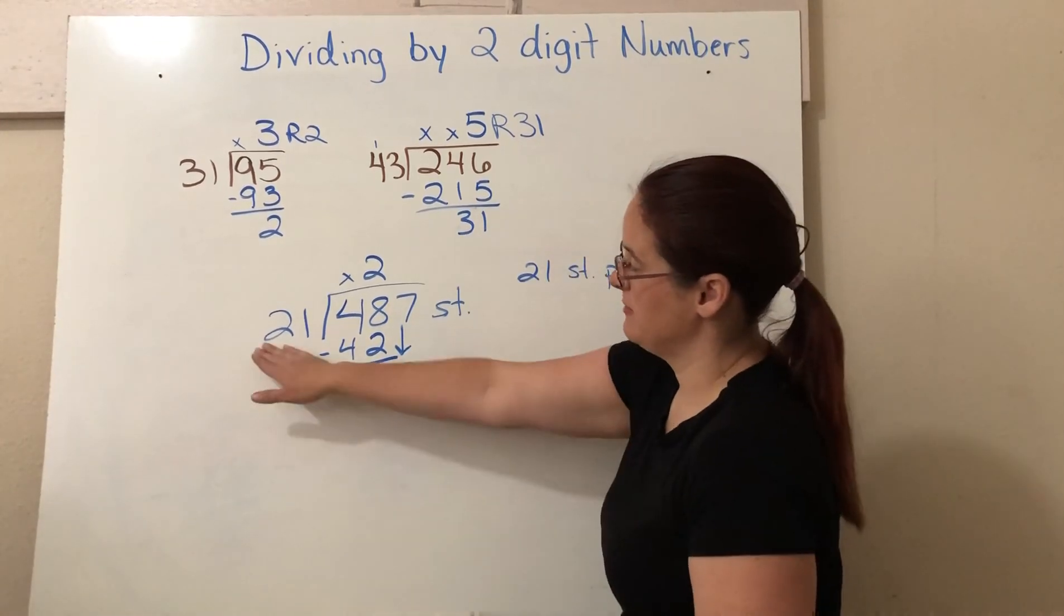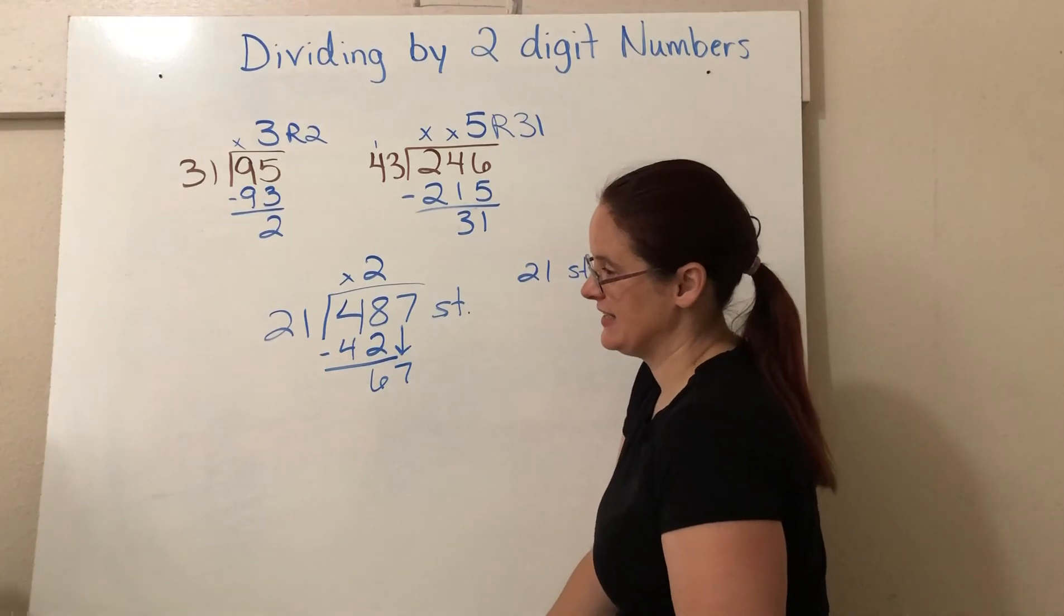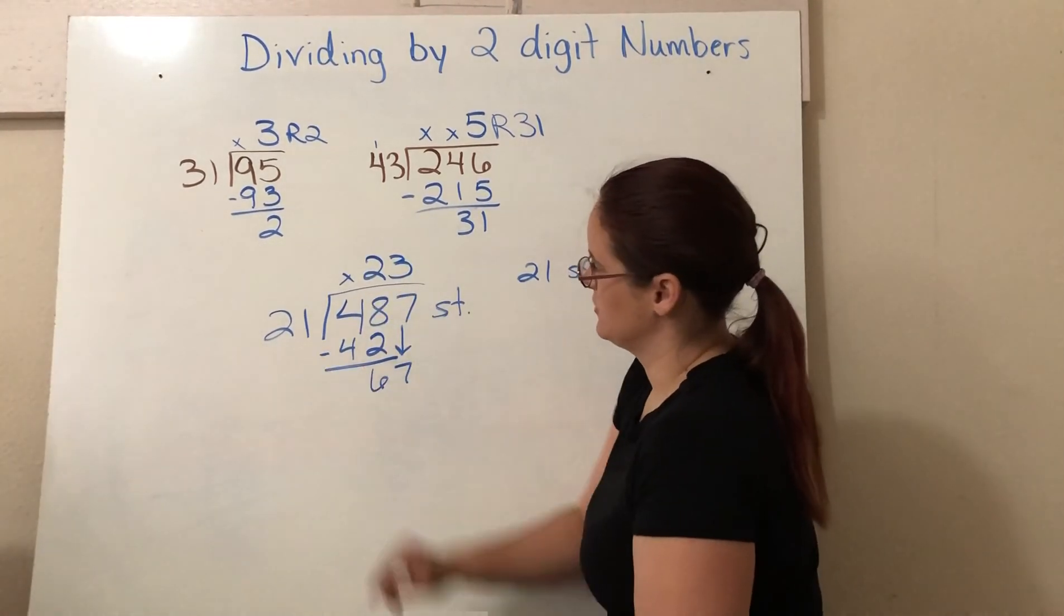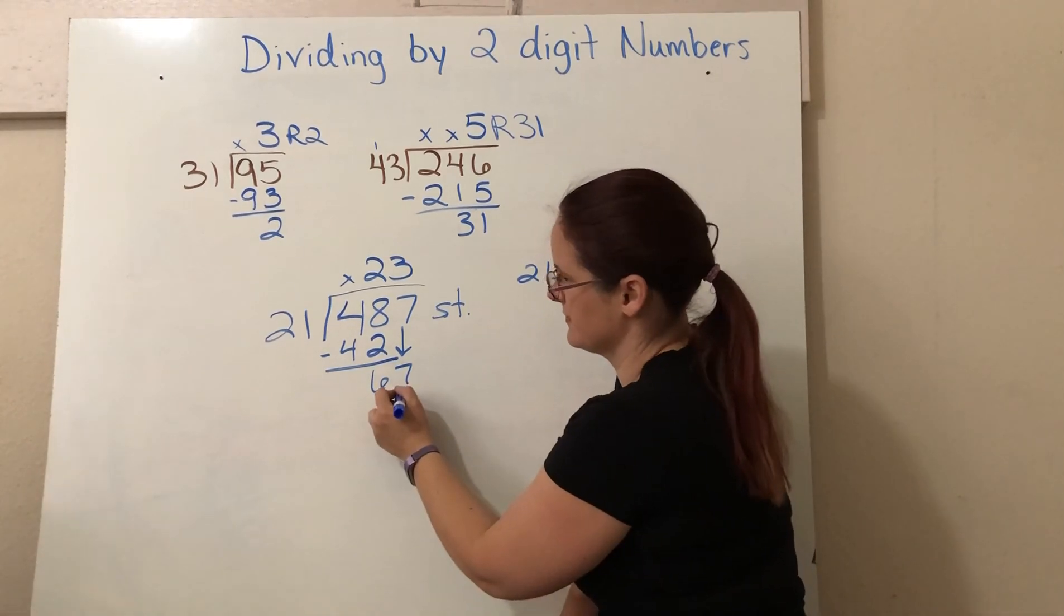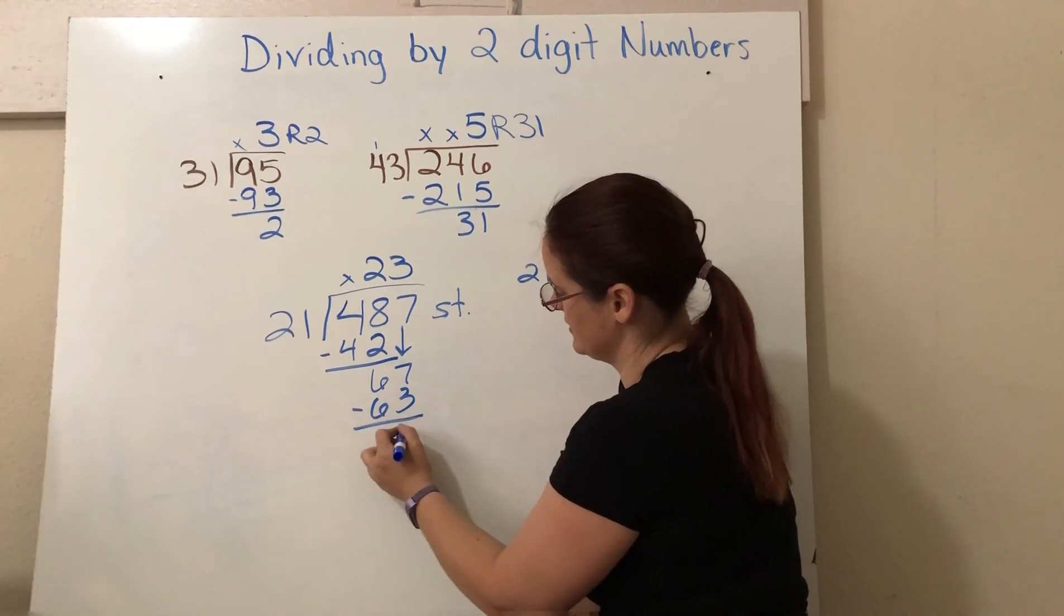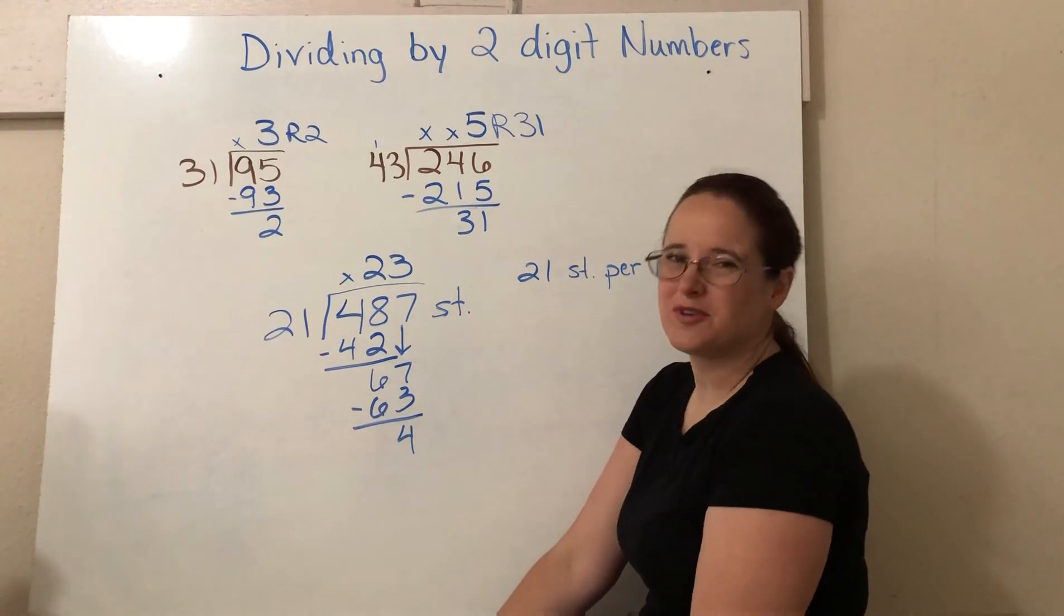And then we drop our seven. And then we do it again. How many times does 20 go into 60? Three. Three times. So we try that. Three times one is three. And three times two is six. And we can subtract. So we get a remainder of four.